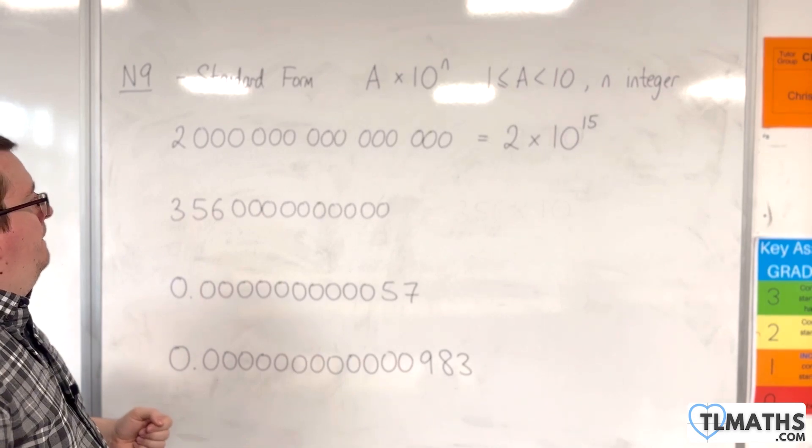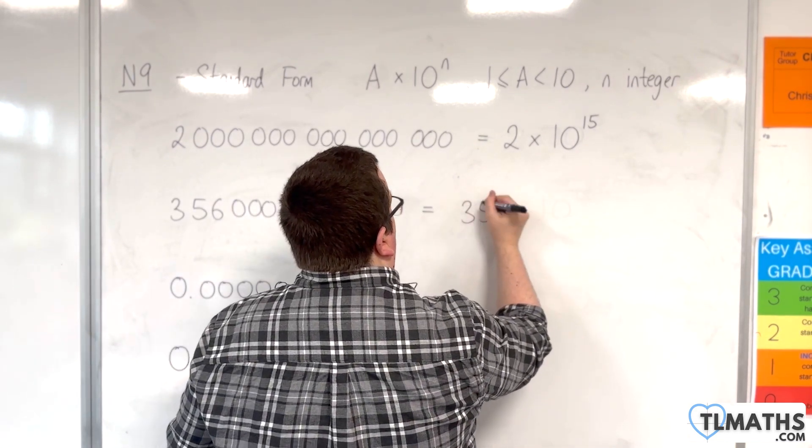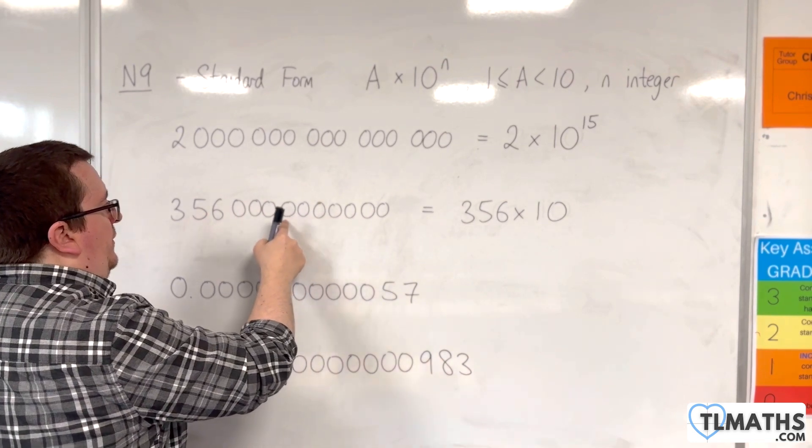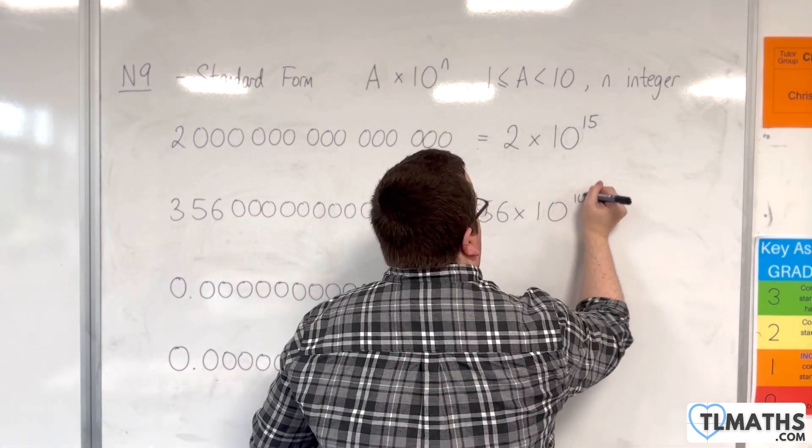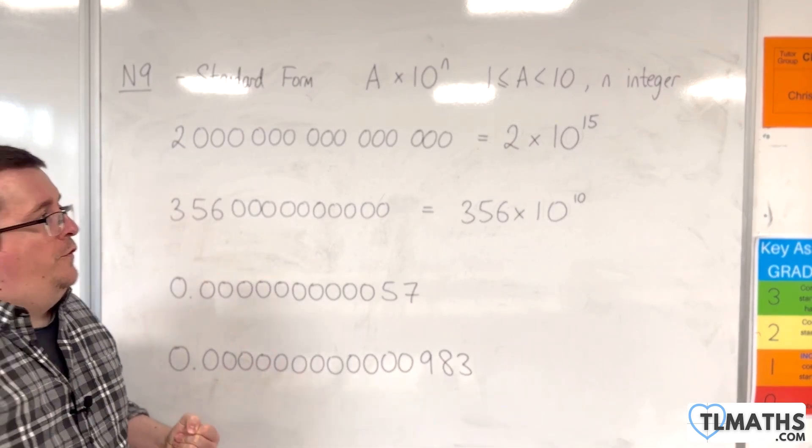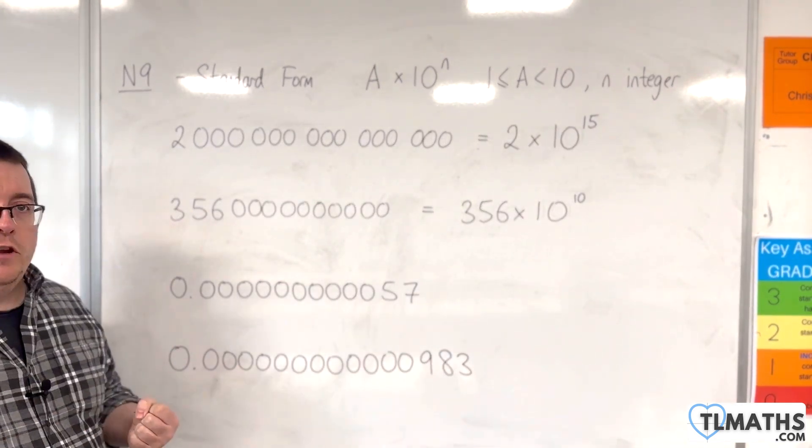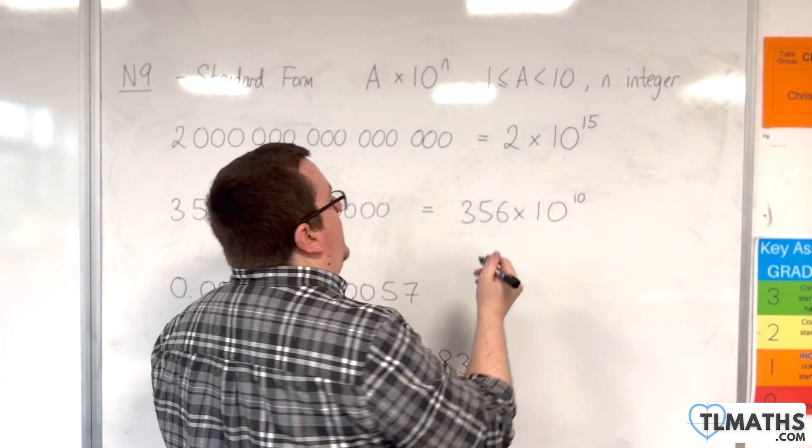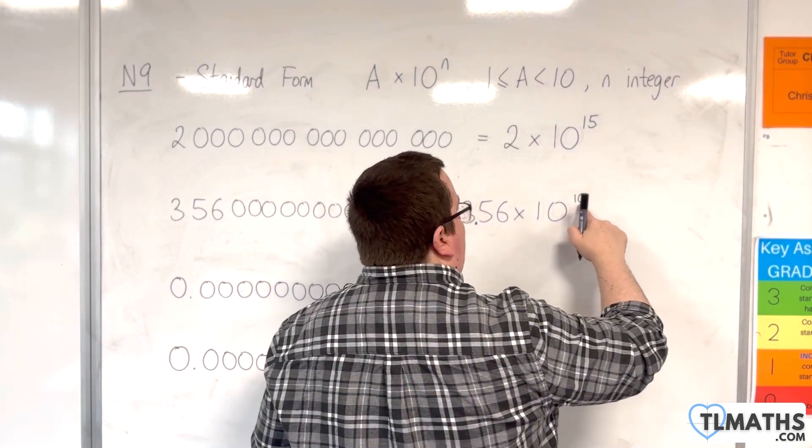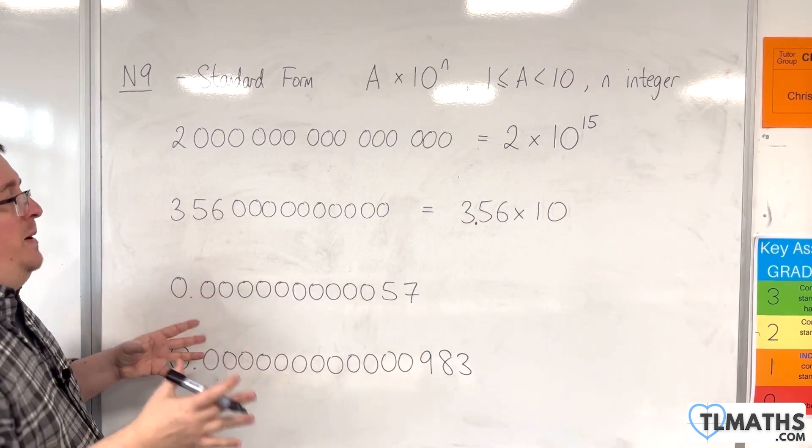What about this one? Now you might be thinking we could write that as 356 times by 10 to the power of 1, 2, 3, 4, 5, 6, 7, 8, 9, 10. Perfect. But wait, that's not right, because the 356 isn't between 1 and 10. So that's no good. Instead, what we need is 3.56. But that now makes this 10 incorrect. We need that number to be between 1 and 10.